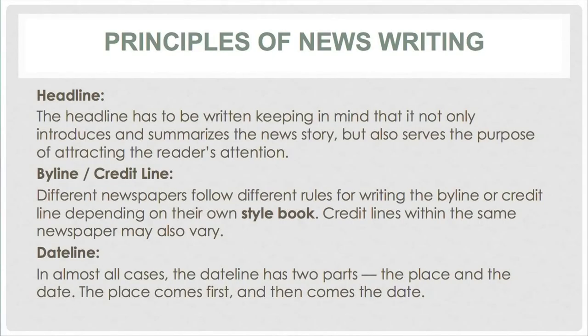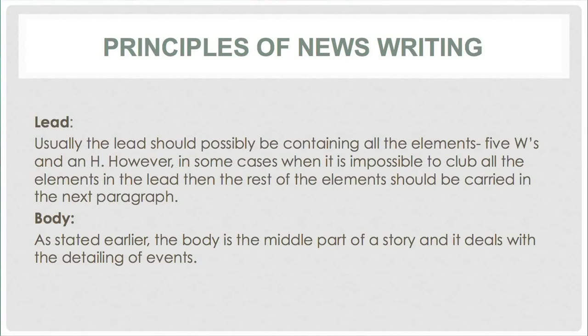The dateline is usually divided into two parts — the place and the date, with the place coming first followed by the date. Then comes the lead, which contains the most important elements of the entire news story — consisting of the five W's and one H. However, in certain cases when it is impossible to bring together all the elements under the same umbrella in the lead, the rest of the elements should be carried in the next paragraph. Then comes the body. The body is the middle part of a news story and it deals mostly with the description of the entire events. The important events are placed in the lead, and those events described in detail are put into the body of the news story.